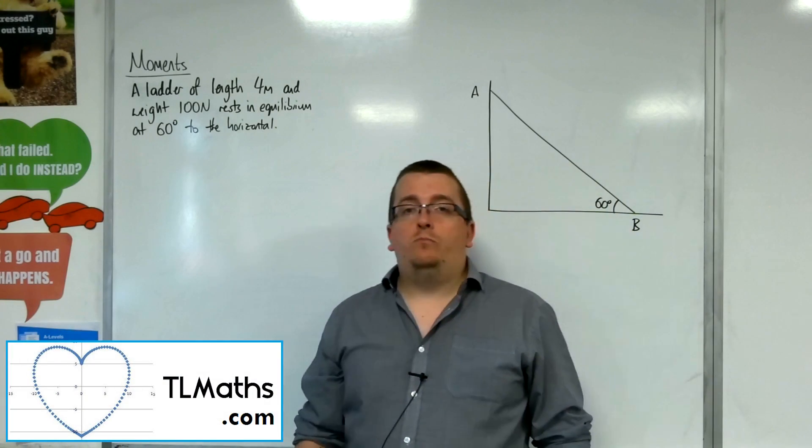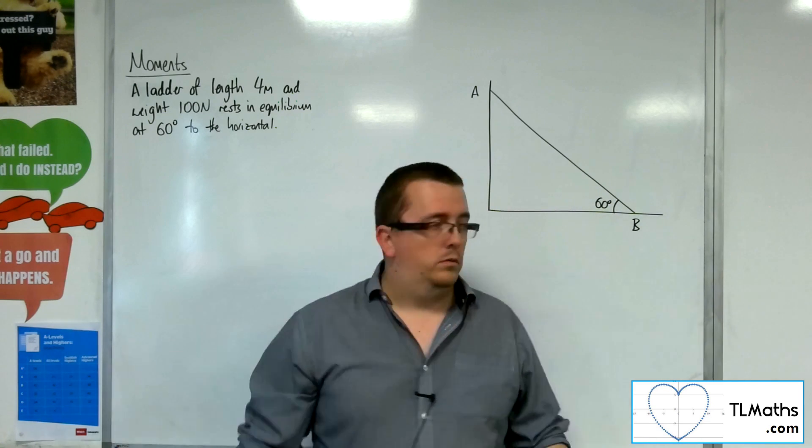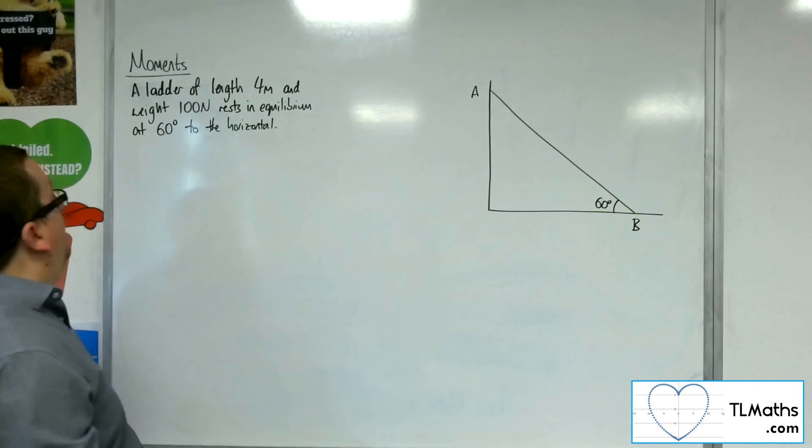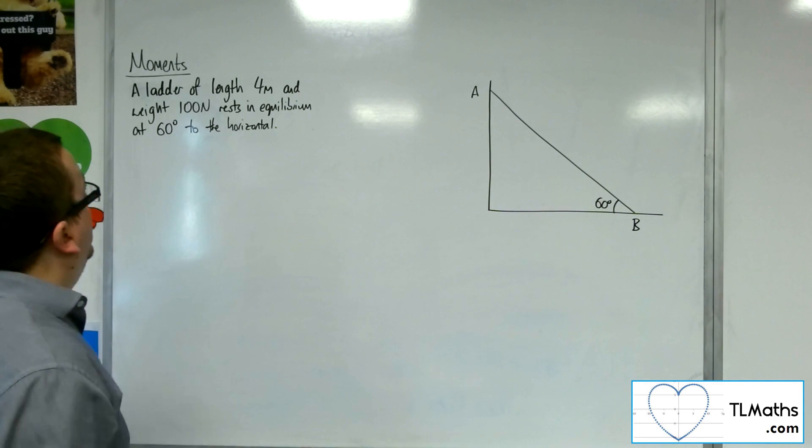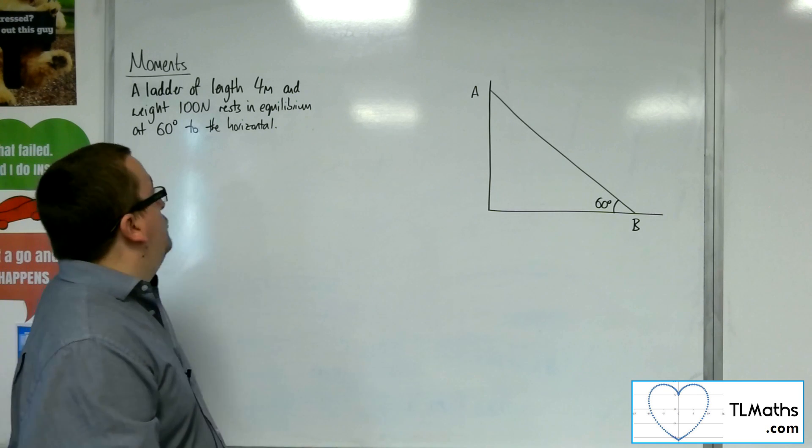Quite often in these types of problems you're going to have to deal with a ladder set up against a wall. In this case we've got a ladder of length 4 meters and weight 100 newtons rests in equilibrium at 60 degrees to the horizontal.